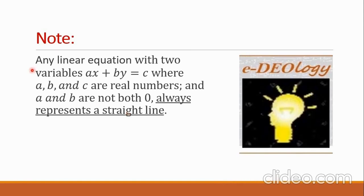Let us note: any linear equation with two variables AX plus BY equals C, where A, B, and C are real numbers and A and B are not both 0, always represents a straight line.